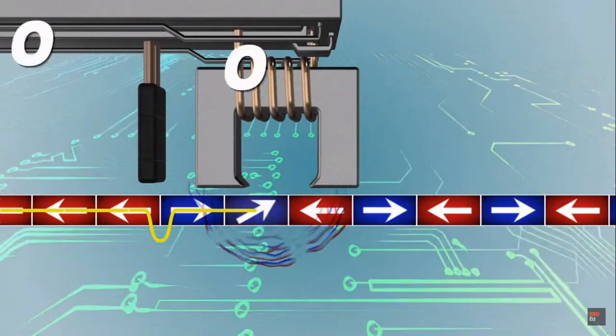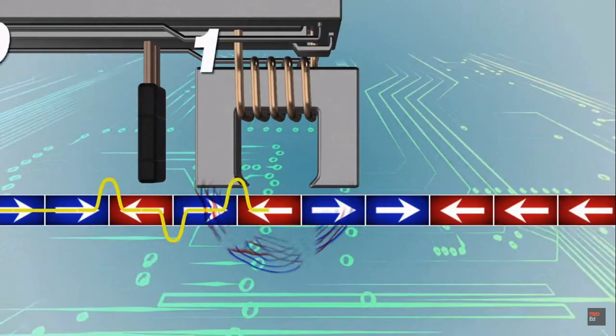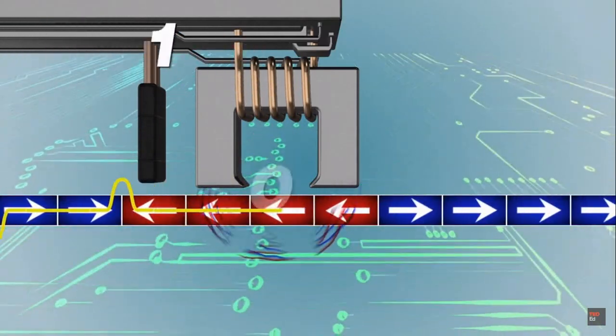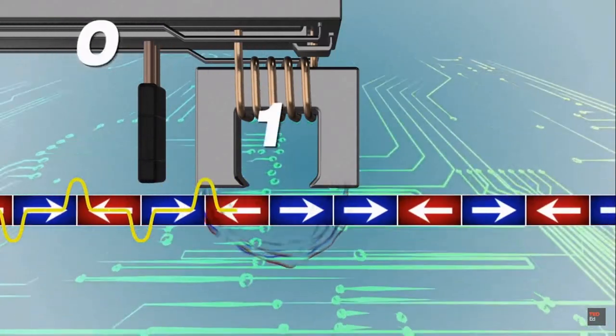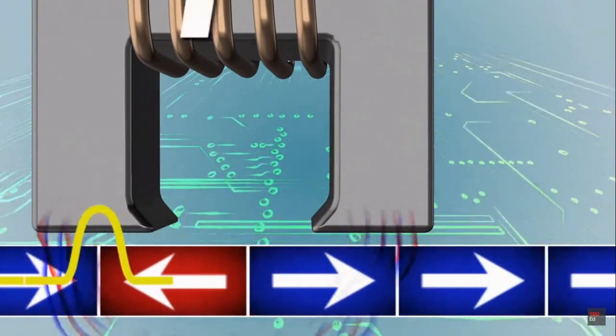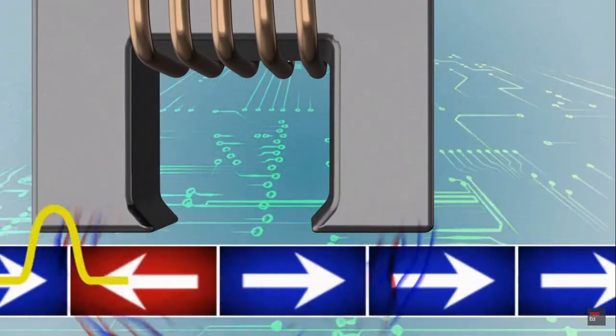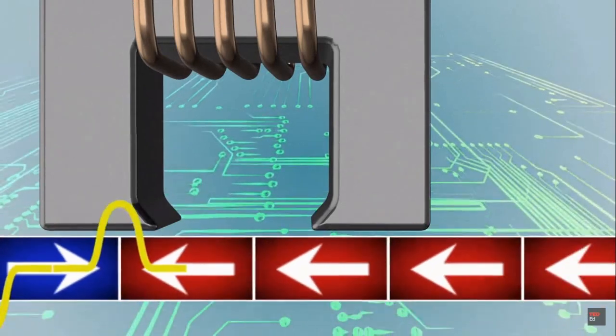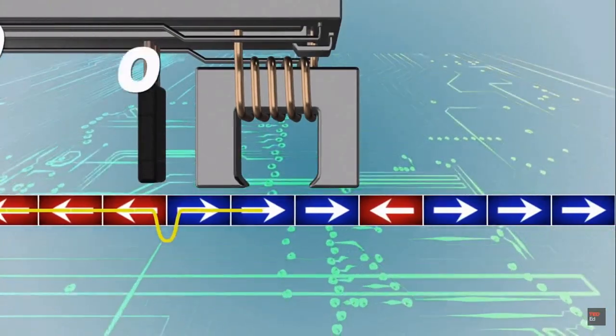Data is written onto the disk by converting strings of bits into electrical current fed through an electromagnet. This magnet generates a field strong enough to change the direction of the metal grain's magnetization.